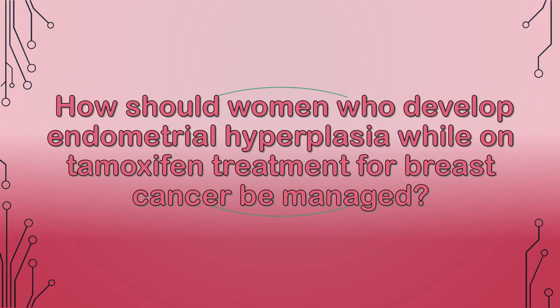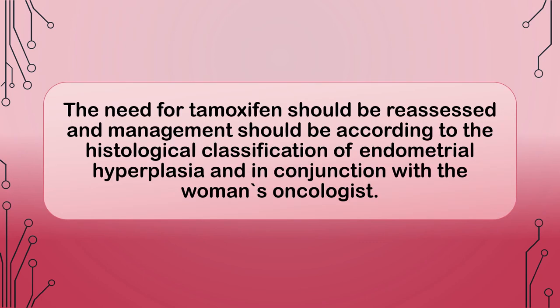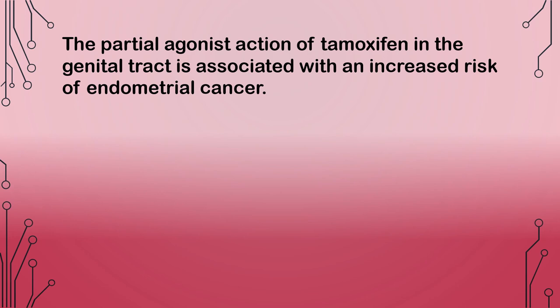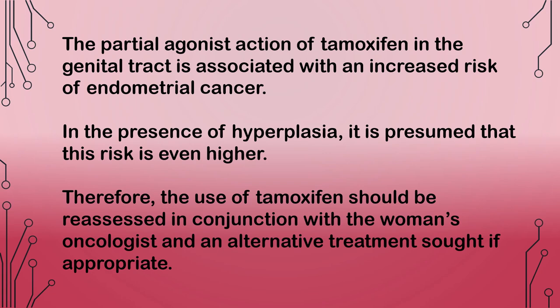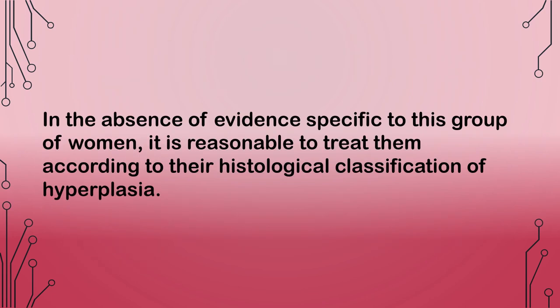How should women who develop endometrial hyperplasia while on tamoxifen treatment for breast cancer be managed? The need for tamoxifen should be reassessed and management should be according to the histological classification of endometrial hyperplasia, in conjunction with the women's oncologist. The partial agonist action of tamoxifen in the genital tract is associated with an increased risk of endometrial cancer; in the presence of hyperplasia, this risk is presumed to be even higher. Therefore, the use of tamoxifen should be reassessed in conjunction with the women's oncologist and an alternative treatment sought if appropriate. In the absence of evidence specific to this group, it is reasonable to treat them according to their histological classification of hyperplasia.